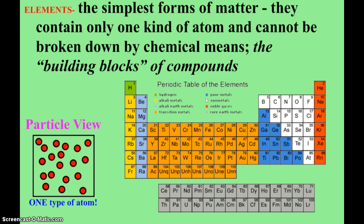They are, as it says, the simplest forms of matter. They contain only one kind of atom, and we cannot break an element down by normal chemical means. We can destroy elements other ways when we get into nuclear chemistry, but under normal chemical means, we can't break elements down. You see the particle view there, all the same red circles, one type of atom. And when we put elements together, we make our other type of substance, compounds.